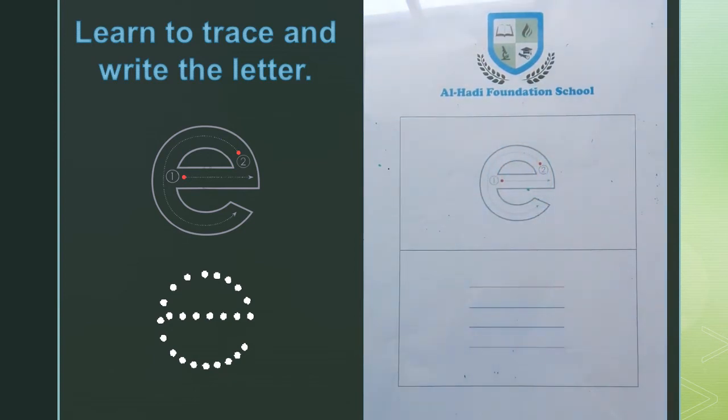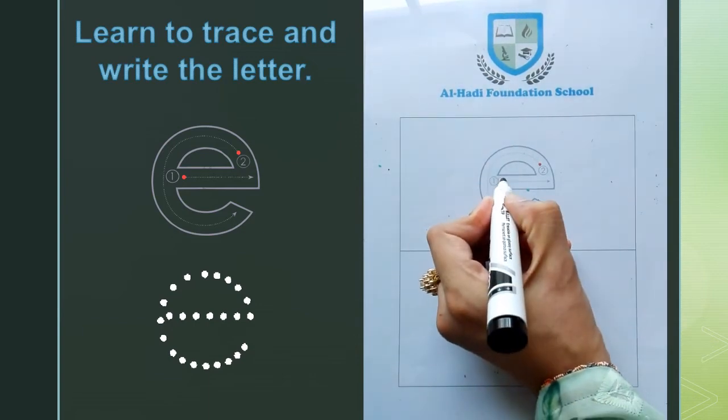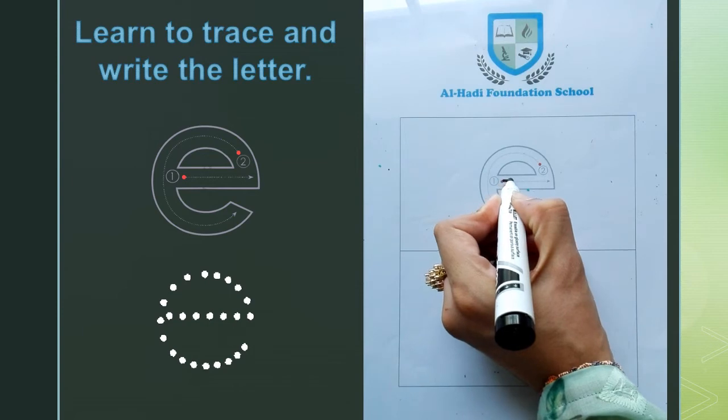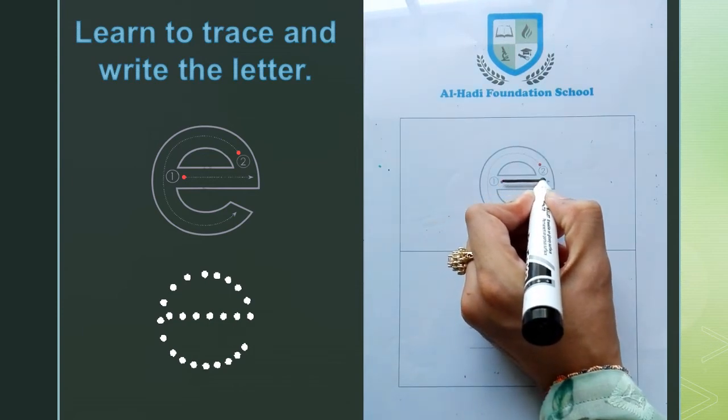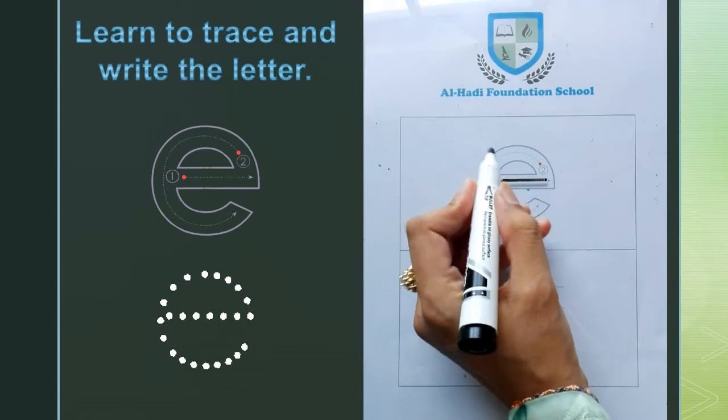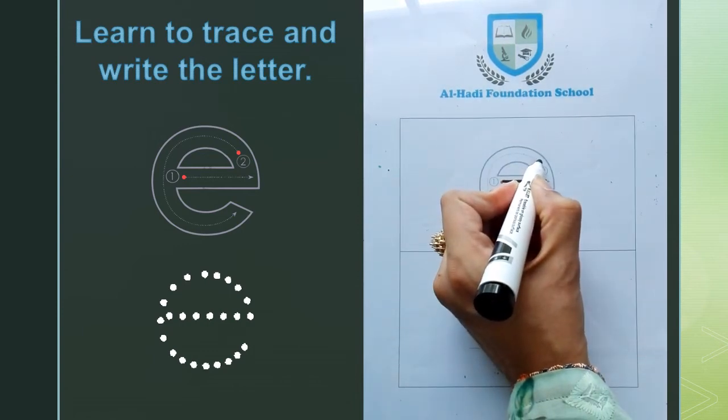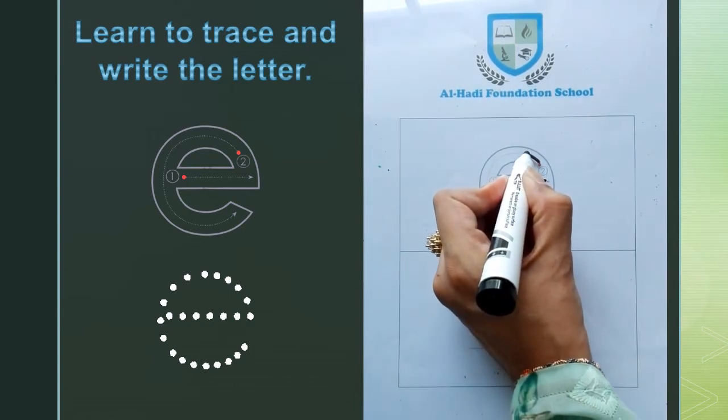अब अपनी pencil की बारीक नोक पहले dot पे रखें. Pencil आश्तगी से चलाते हुए straight line left to right बनाएं. अब दूसरे red dot पे अपनी pencil रखें. Pencil आश्तगी से चलाते हुए left curve बनाएं.